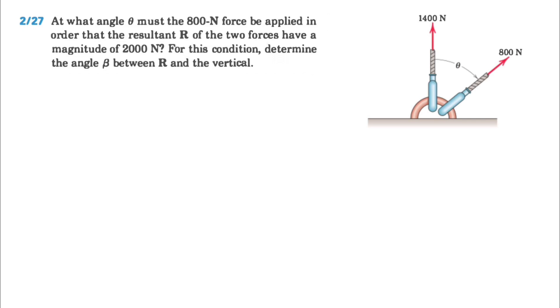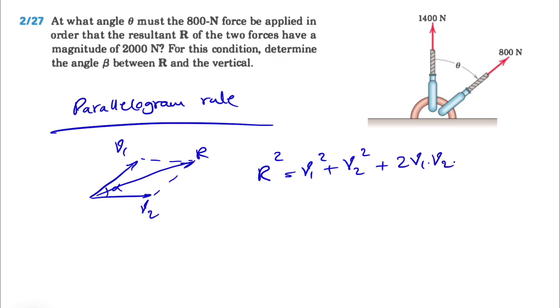First of all, we're going to use the parallelogram rule to find the resultant of the two vectors. From parallelogram rule we know if we have these two vectors, let's call them V1 and V2, and this angle alpha, the resultant R squared equals V1 squared plus V2 squared plus 2V1 times V2 times cosine of alpha.